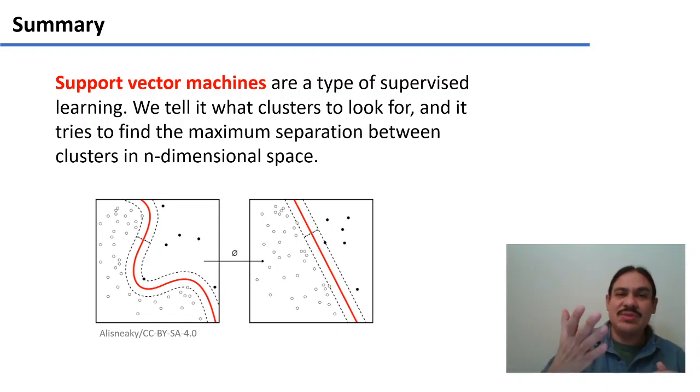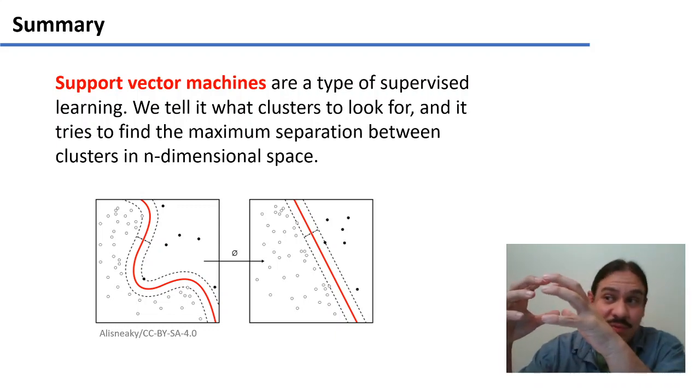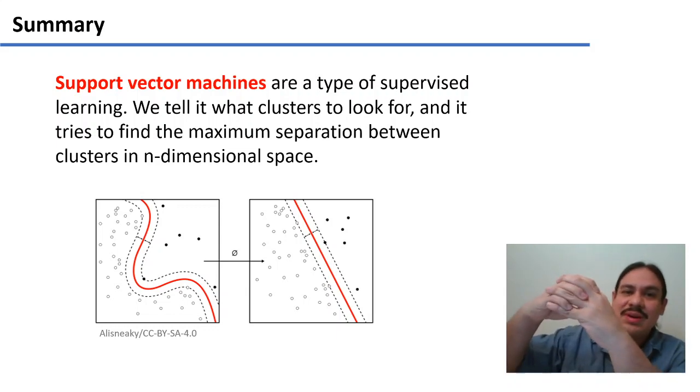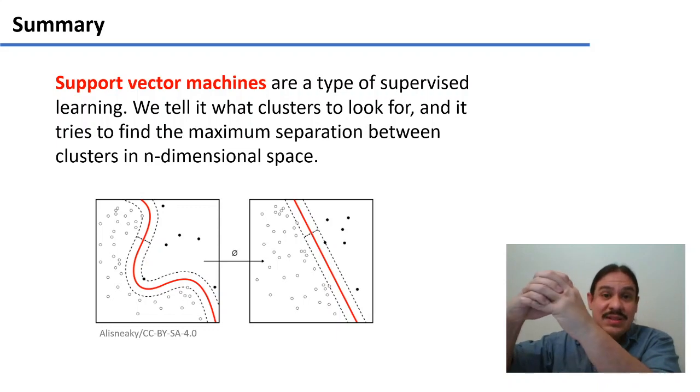What the support vector machine actually does is that we tell it what the cluster is. We give it a group of features and then tell it, this is a good review. These features are a good review. These other features are a bad review. And then we tell it, this is the cluster you should be looking for. Tell me what makes it similar. Try to be sure that you can separate this cluster from this cluster here.